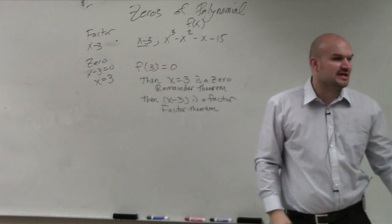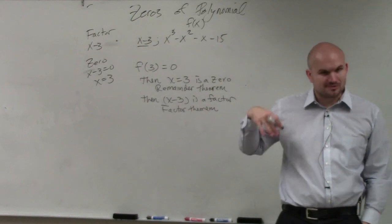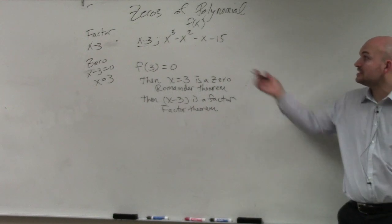And you guys agree with me that x minus 3 and x equals 3 are related to each other. x minus 3 is the factor, x equals 3 is the 0. So let's just check.